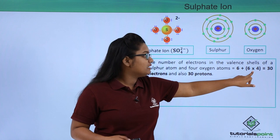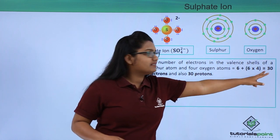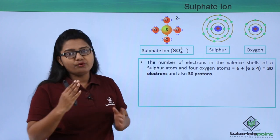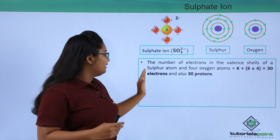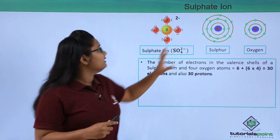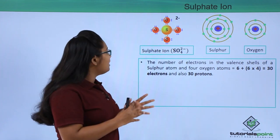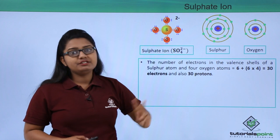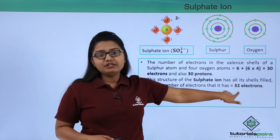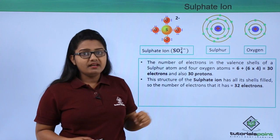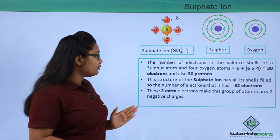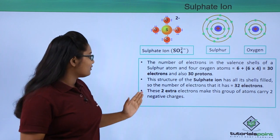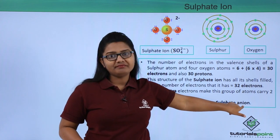There are four oxygen atoms with six electrons each in their valence shells, so the total is six multiplied by four, giving twenty-four. Adding the six from sulfur gives thirty valence electrons total, meaning there are thirty protons to balance them. When these five atoms come together and gain two more electrons to form the ion, the electron count becomes thirty-two. With thirty protons but thirty-two electrons, the two extra electrons give this group a charge of minus two — making it the sulfate anion.